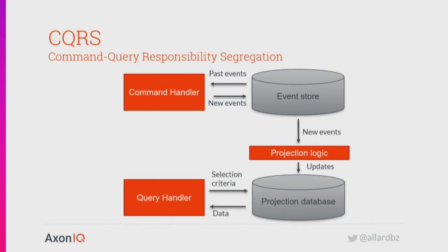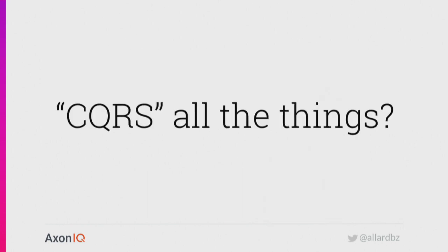And that's where CQRS comes in. CQRS is a relatively popular architectural pattern nowadays — it's about splitting the commands and the queries. For the command-handling part it's very useful to use the event store. For the queries, we can use what we call projections — information ready to be efficiently queried so that whatever other systems want to know about the state of this component, they can just use that query side. And we can use events to update the projections in the database. This is only a very brief summary of CQRS — there's much more to it.